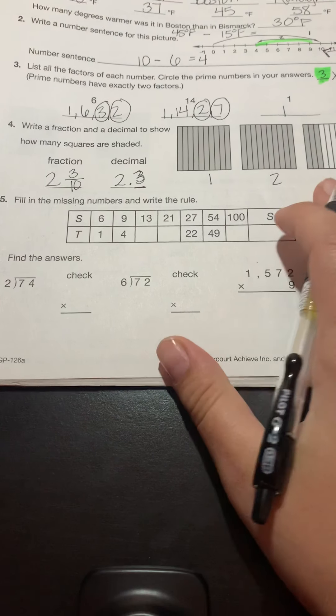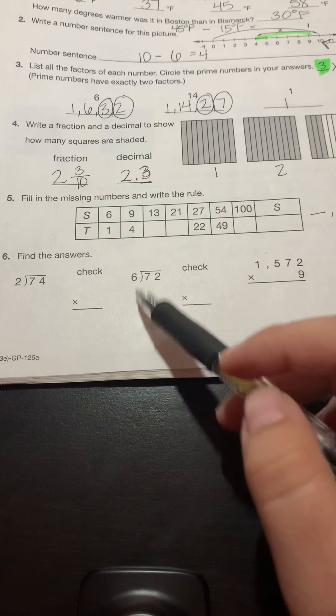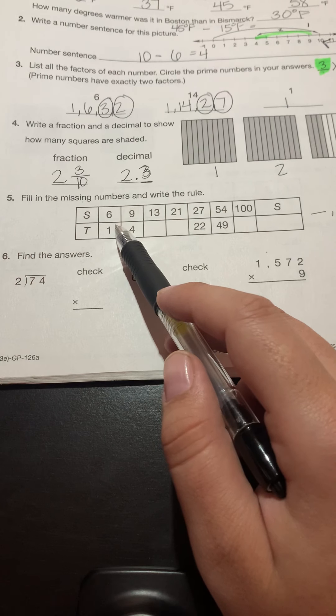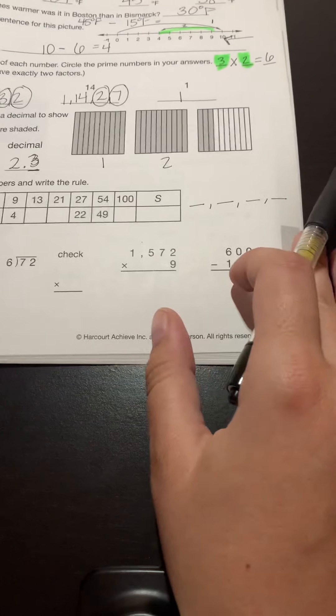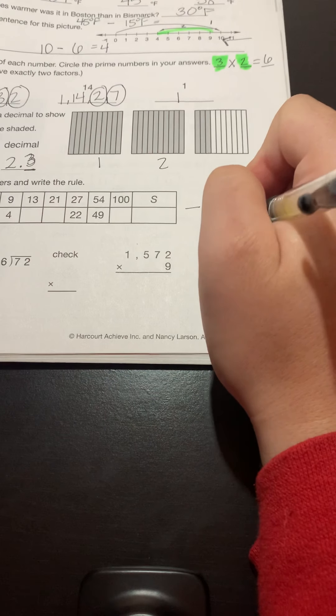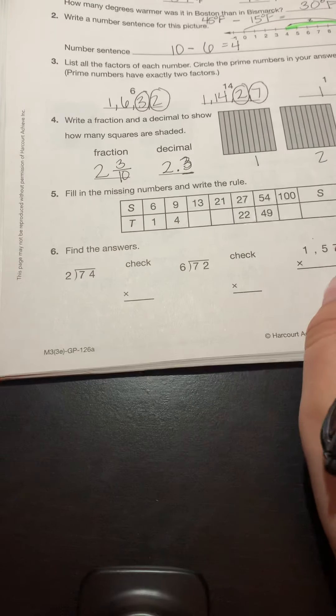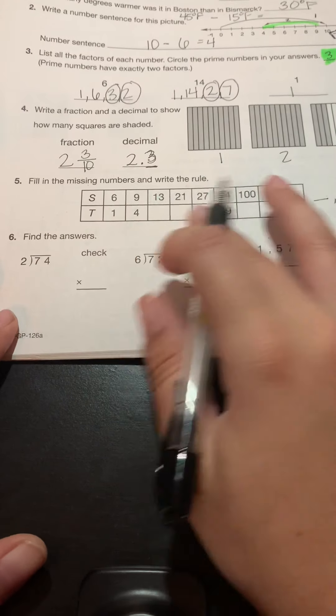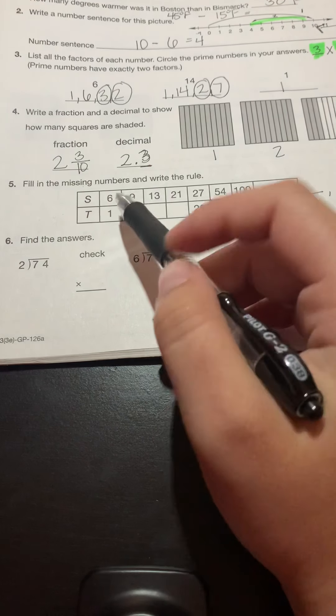All right, let's take a look here at what we're going to do for number five. Fill in the missing numbers and write the rule. So let's take a look. This is something you guys have been doing all year long. You're looking at a pattern and you're writing the rule. And before it used to be written like this and then at the bottom it would just say rule, right? The only difference here is that now the way that it's written is different. It's written in a table.